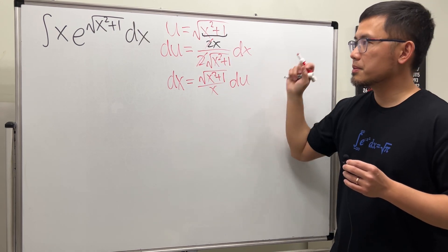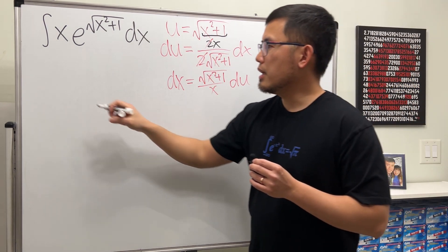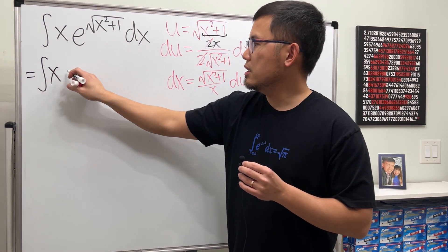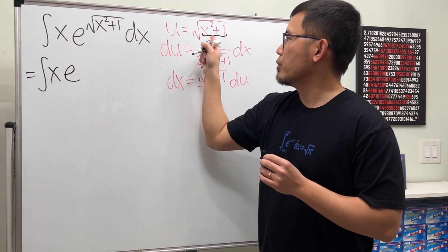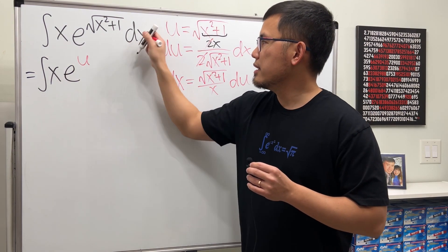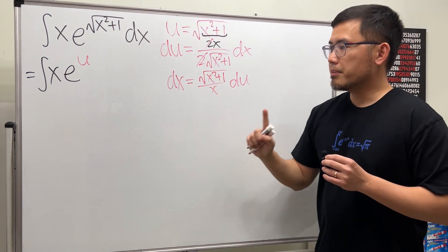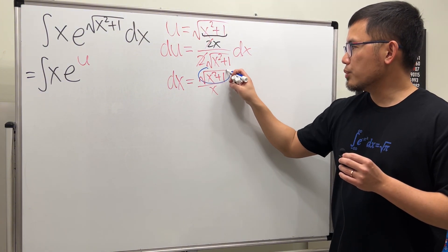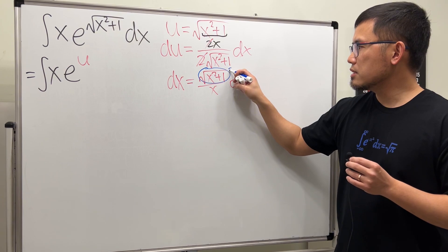Now let's come here and say that this is the integral of x times e to this power which is the same as u. And then dx is this, but notice though, the square root of x squared plus 1, isn't this the same as u?